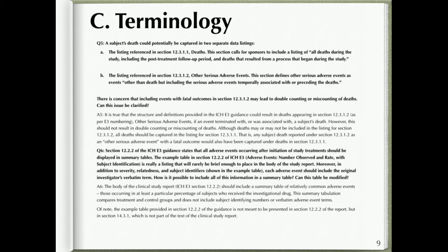Question six: Section 12.2.2 of the ICH E3 guidance states that all adverse events occurring after initiation of study treatments should be displayed in summary tables. The example table in section 12.2.2 — 'Adverse Events: Number Observed and Rate with Subject Identification' — is really a listing that will rarely be brief enough to place in the body of the study report. Moreover, in addition to severity, relatedness, and subject identifiers shown in the example table, each adverse event should include the original investigator's verbatim term. Can this table be modified?